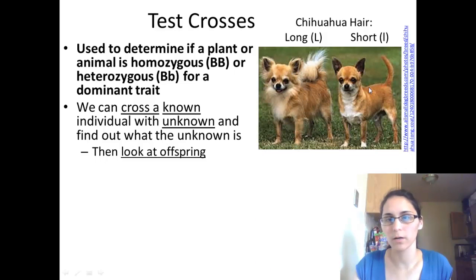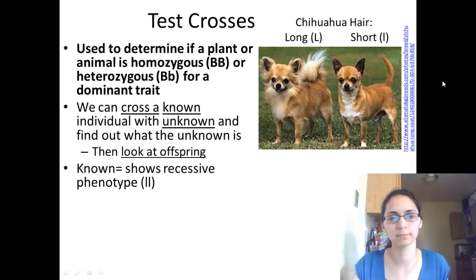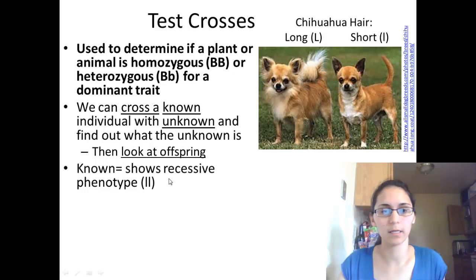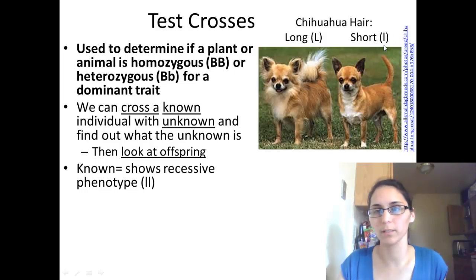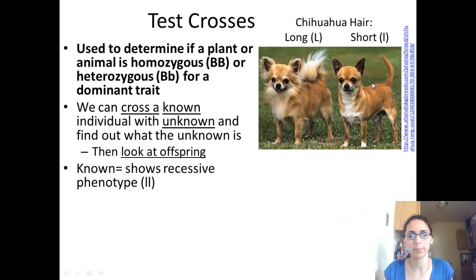Here's a long-haired Chihuahua and a short-haired one. We know the known individual that shows the recessive phenotype. If long hair is dominant, represented by big L, and short hair is recessive, represented by little l, then by just looking at the short-haired Chihuahua we know his genotype, because the recessive phenotype is only shown when there is no dominant allele — since the dominant allele would take over.